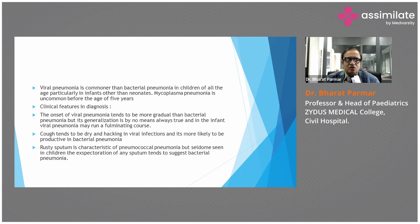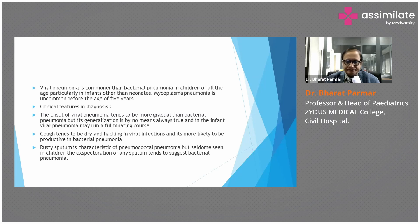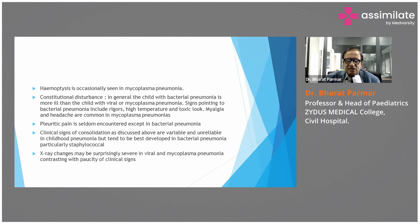Clinical features for the diagnosis of pneumonia: the onset of viral pneumonia tends to be more gradual than bacterial pneumonia, but this generalization is by no means always true, and in the infant, viral pneumonia may run a fulminating course. Cough tends to be dry and hacking in viral infection and is more likely to be productive in bacterial pneumonia. Rusty sputum is characteristic of pneumococcal pneumonia but seldom seen in children. The expectoration of any sputum tends to suggest bacterial pneumonia. Constitutional disturbance in a child with bacterial pneumonia is generally greater than in a child with viral or mycoplasma pneumonia.